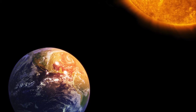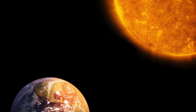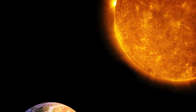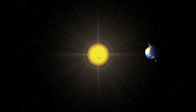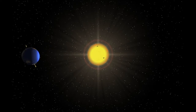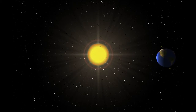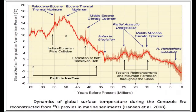The Milankovitch cycle, named after the Serbian astronomer and mathematician generally credited with calculating the magnitude of changes in the Earth's eccentricity, axial tilt and precession, taking in unison creates alterations in the seasonality of solar radiation reaching the Earth's surface. These times of increased or decreased radiation directly influence the Earth's climate system.